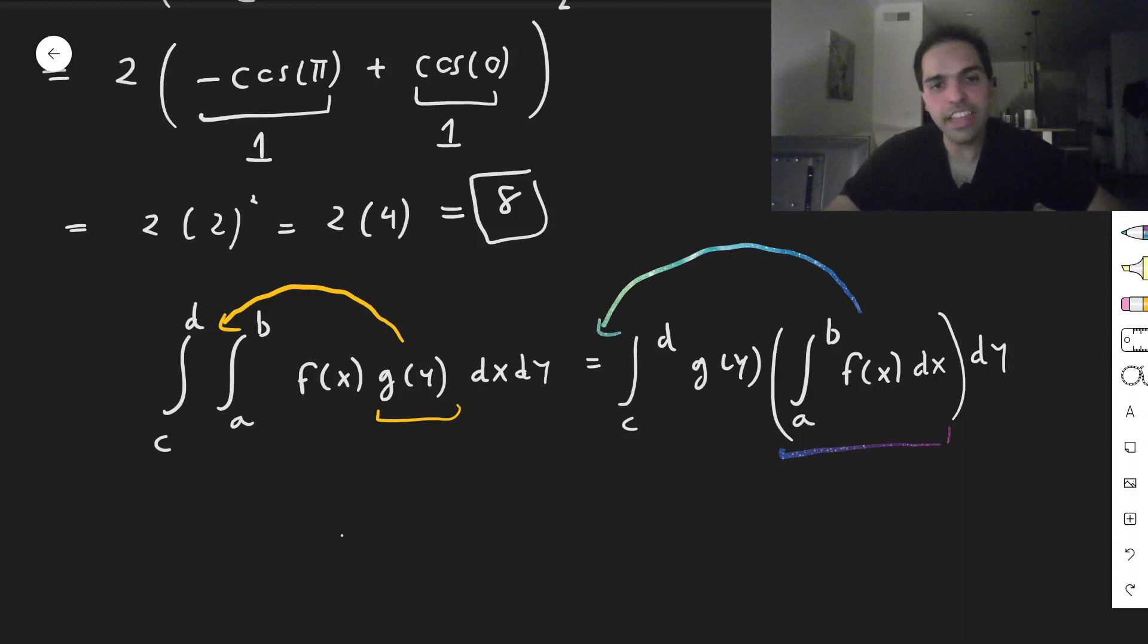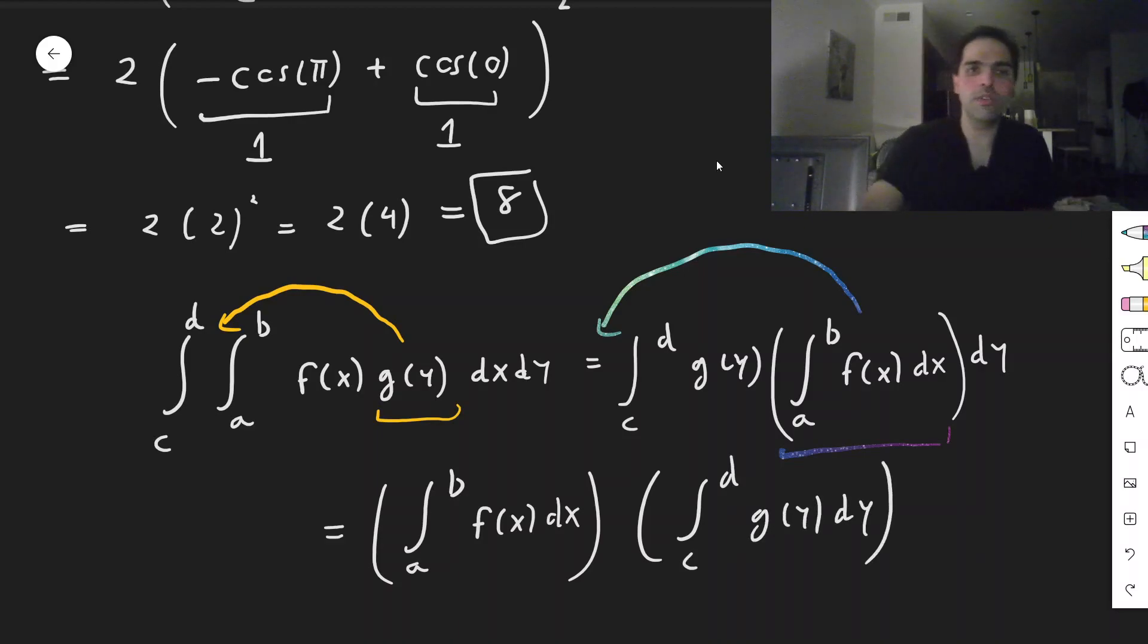And then, in the end, what you get, we get integral from a to b f of x dx times integral from c to d g of y dy. And in particular, what this becomes is just a split-up integral. So, that's why if you have f of x, g of y, and you have constants, you can just split up the integral.